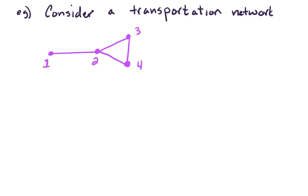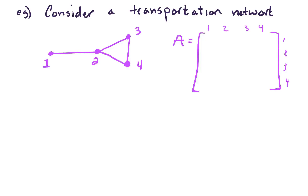Let's begin by considering a transportation network. We can write the adjacency matrix. All roads in our network are two-way streets, so our matrix will be symmetric. The nodes 1, 2, 3, and 4 are the cities in this network. For example, city 1 and city 2 are connected, so we put a 1 in row 1, column 2, and similarly a 1 in row 2, column 1.